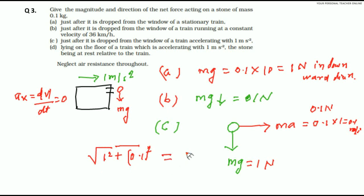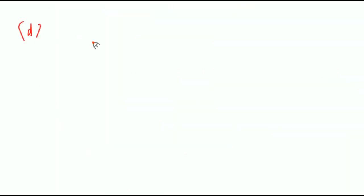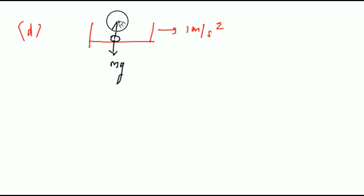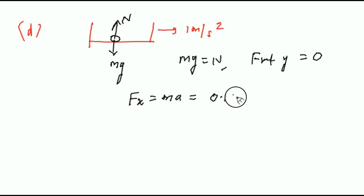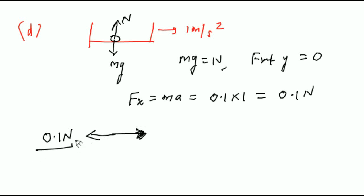Part D: lying on the floor of a train which is accelerating at 1 meter per second square, with the stone at rest relative to the train. Mg acts downward and normal reaction force acts upward, so mg equals N and net force in the y direction equals 0. Net force in the x direction equals mass into acceleration, that is 0.1 kg into 1, equals 0.1 Newton. So in this case, the force acting is a pseudo force opposite to the acceleration, equal to 0.1 Newton in the horizontal direction. There is no net vertical force, so net force is 0.1 Newton.